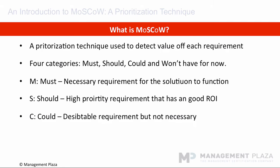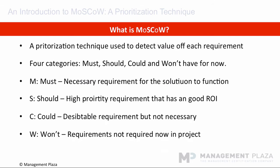Next, could have: this describes a requirement which is considered desirable but not necessary. This will be included if time and resources permit. And lastly, won't have — or won't have for now — represents a requirement that stakeholders have agreed will not be implemented in a given release but may be considered for the future.